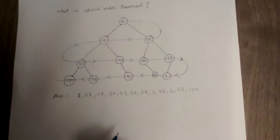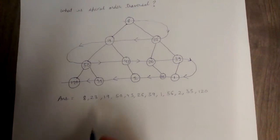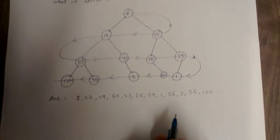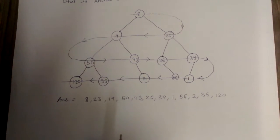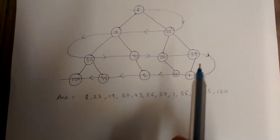So for this particular binary tree, the spiral order traversal will give the output: 8, 23, 19, 50, 43, 26, 39.